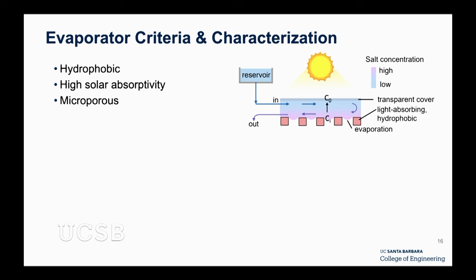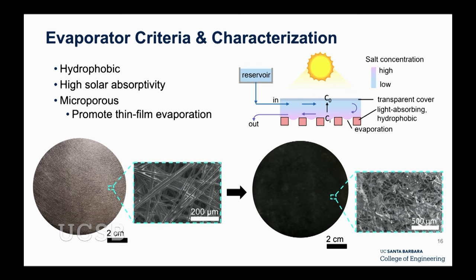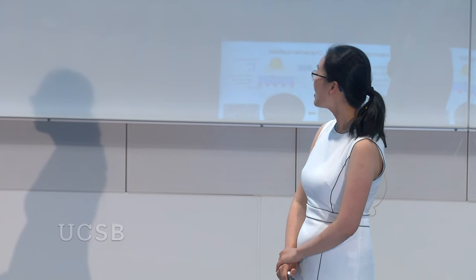The evaporator membrane needs to be hydrophobic, absorb sunlight, and be microporous so there are many pores for evaporation and water vapor transport. We also want low-cost, scalable materials. It turns out commercially available carbon microfiber paper, used in fuel cells for separating gas from liquid phase, fits perfectly. We bought it, coated it with carbon to make it more black so it absorbs sunlight really well, while maintaining its porosity geometry.